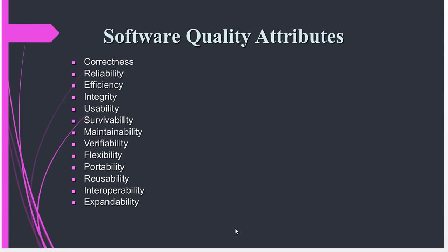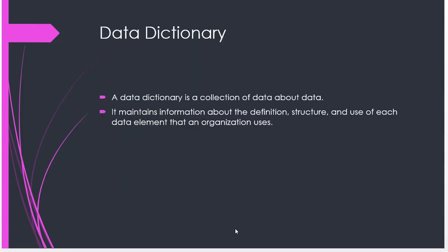Depending on the system, there are different features the user will require that make their work easy — and we have to satisfy these software quality attributes. Your document should also contain a data dictionary, which is a collection of data about data — basically definitions and structure of data or how data elements are used in the organization. For example, one word like 'reliability' could mean one thing in one organization and something different in another, so it needs to be defined in the data dictionary to avoid ambiguous definitions and ensure only one clear definition for each term.